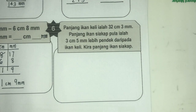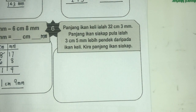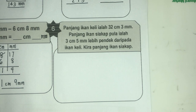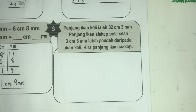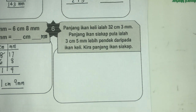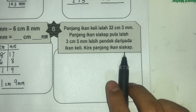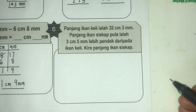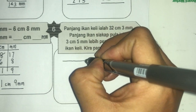Kita pergi pada soalan yang terakhir — soalan kelima. Panjang ikan keli ialah 32 cm 3 mm. Panjang ikan siakap pula ialah 3 cm 5 mm lebih pendek. Bila sebut lebih pendek, operasi apa yang terlibat? Daripada ikan keli, kira panjang ikan siakap bermaksud guna operasi tolak. Sebab lebih pendek merujuk kepada tolak, dan kita nak cari ikan siakap yang lebih pendek. Buat bentuk lazim dulu.